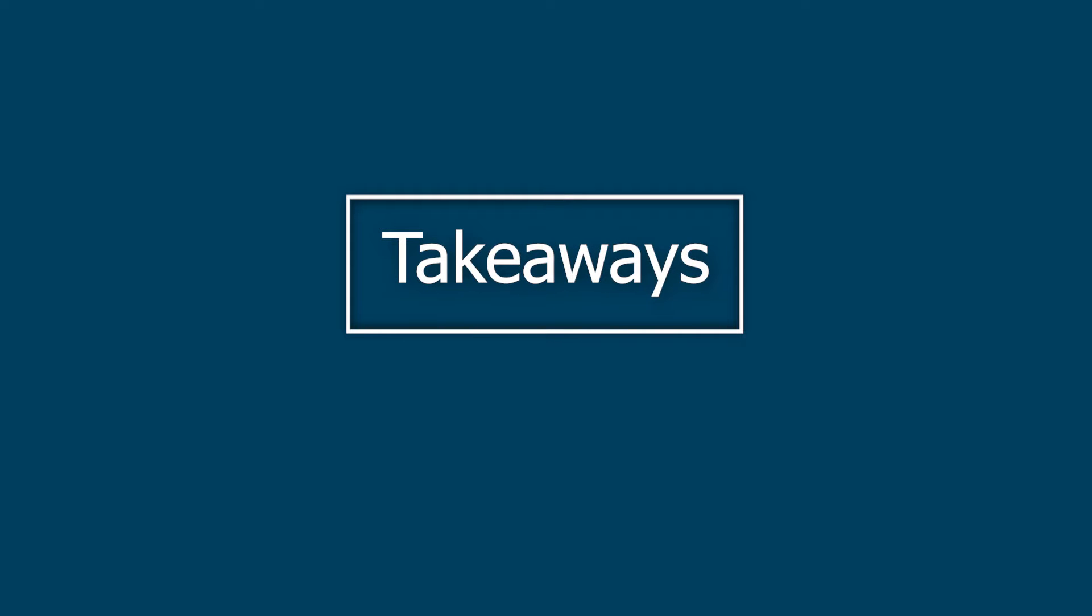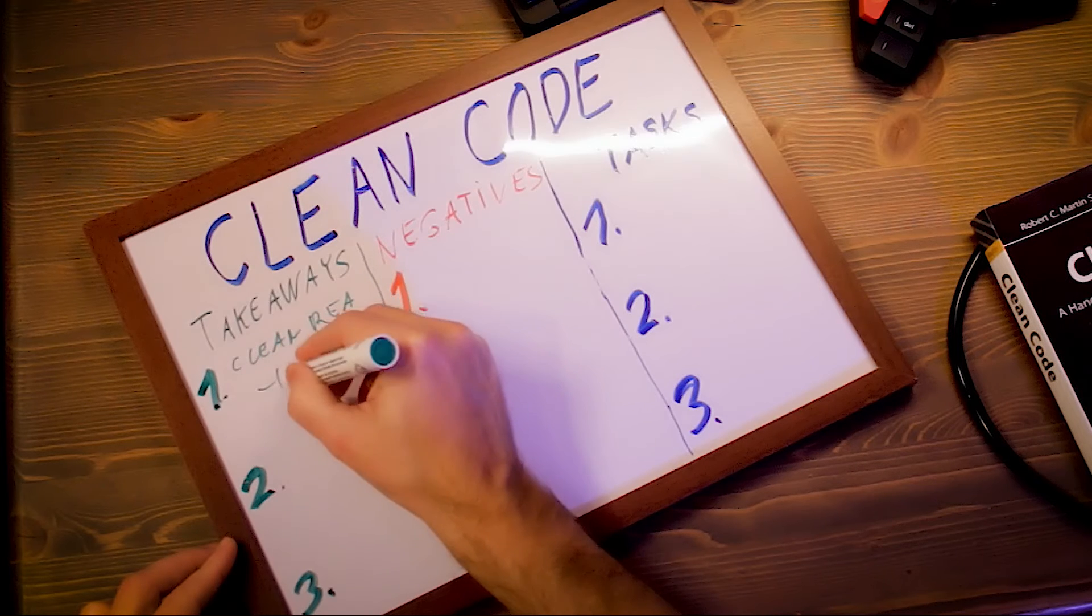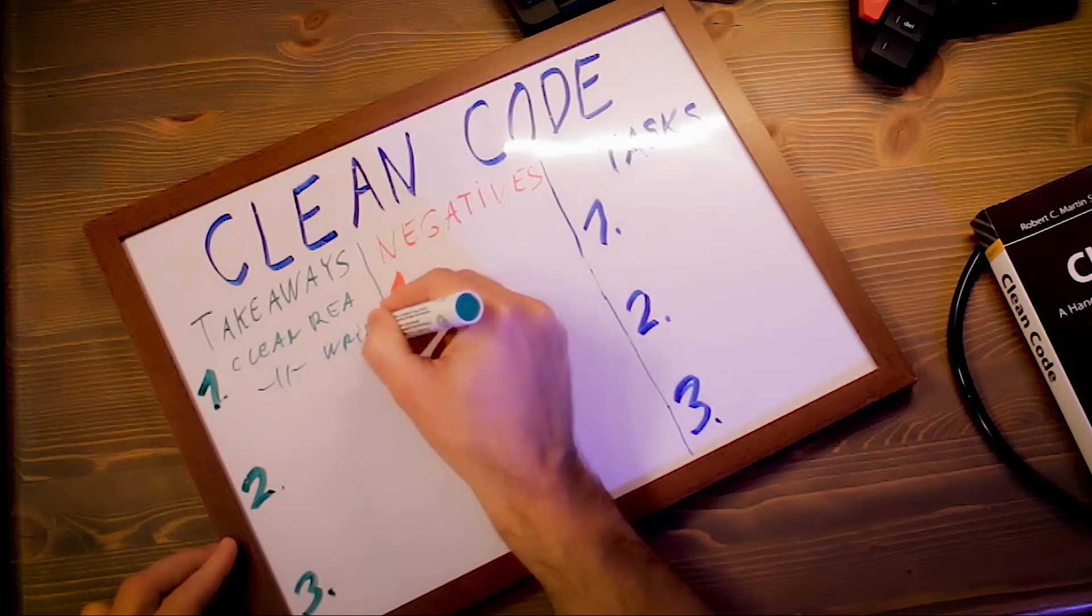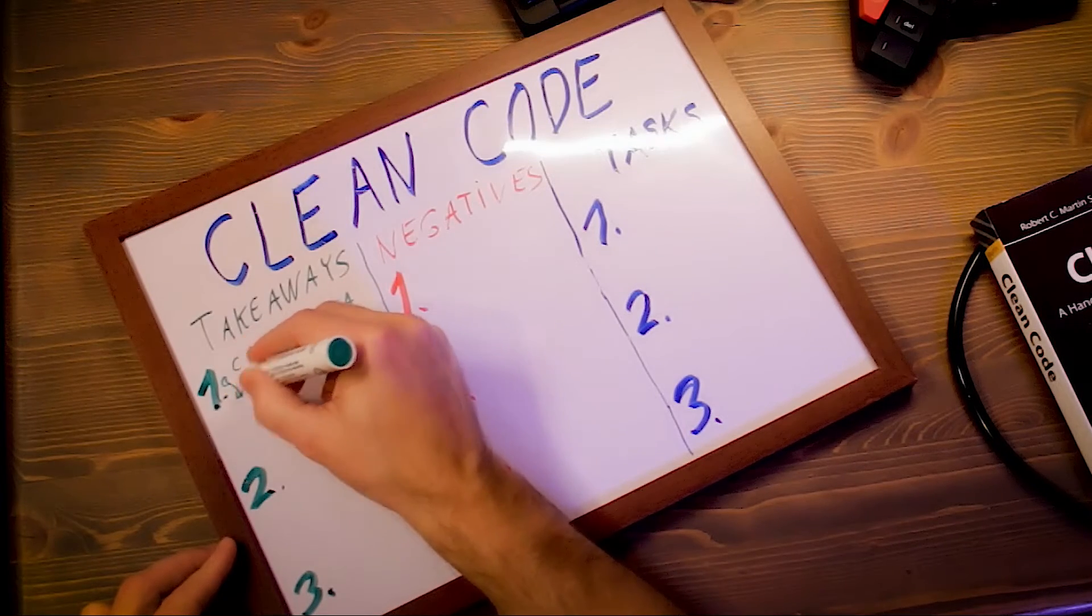So making it easy to read actually makes it easier to write. First takeaway here is understanding that code quality is important. The cleaner code is to read, the cleaner it is to write and then read again. And the cleaner we write it, the cleaner we read it.